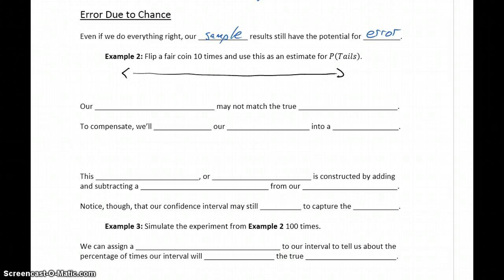So we're trying to estimate the probability of getting tails. We know that that actual population proportion, P, should be 0.5. But when we run our experiment, we got values of P-hat,